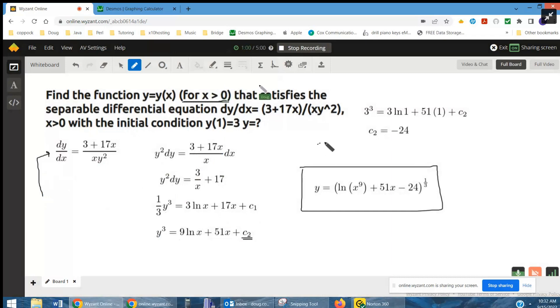And so right here, let's find out what that constant is. We're told that when x is 1, y is 3. That's what this means. So 1 in for x. Ln of 1 is 0, so this term goes away. 3 cubed is 27. 27 minus 51 is what c sub 2 is.